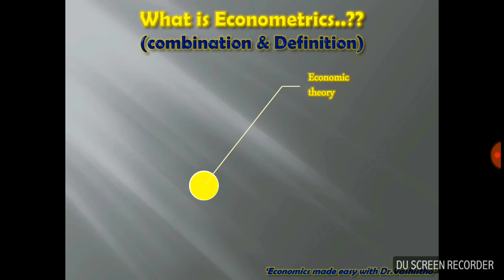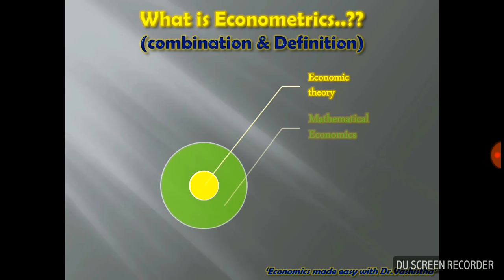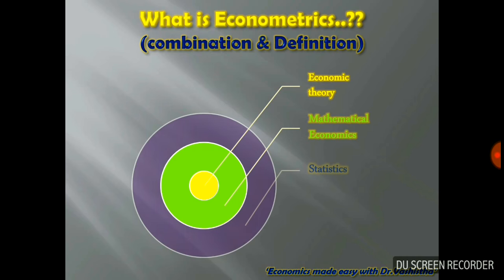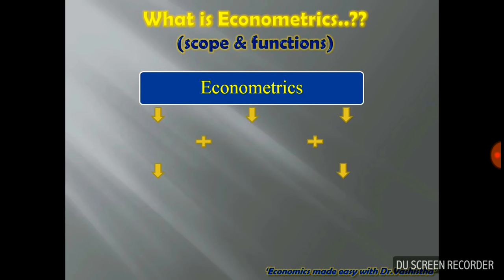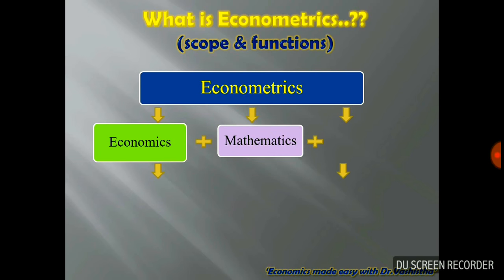As we have understood the literal meaning of econometrics, econometrics comprises of three major parts, or we can say three main subjects — that is, economic theory, mathematical economics, and statistics. All these three contribute to the field of econometrics, making it one of the highly demanded and viable fields of study. Now let us move towards the scope and major functions of econometrics.